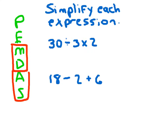Taking a look at this first problem, the instructions say to simplify each expression: 30 divided by 3 times 2. It says to do multiplication and division from left to right, meaning we work on the first multiplication or division problem we find. Working from left to right, the first one we find is 30 divided by 3. 30 divided by 3 is 10, and then we multiply by 2 to get 20.